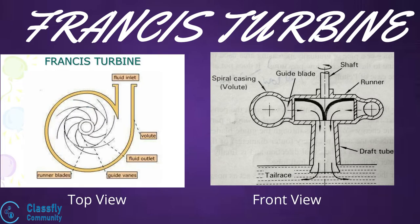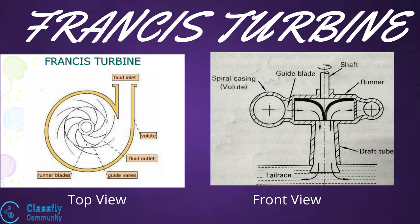The Francis turbine primarily consists of a runner, which is a circular wheel on which a series of curved blades are fixed. The runner is coupled to a rotating vertical shaft. It also has a guide wheel, which is a stationary wheel around the runner. A number of blades are fixed around the circumference of the guide wheel, called guide blades, which allow water to strike the moving blades at a required angle.